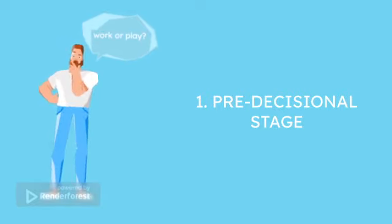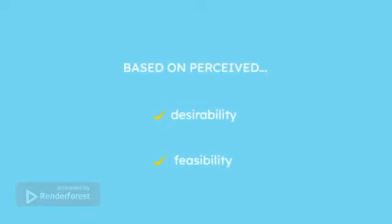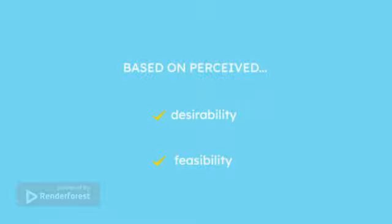We generally decide on one option based on two aspects that the individual subjectively assesses: how desirable a goal is, and how likely they think it is that they will reach this goal. Thus, we decide on the option that seems the most attractive and achievable for us.